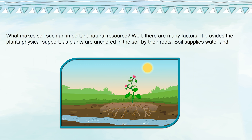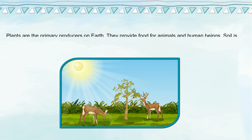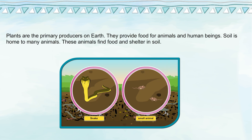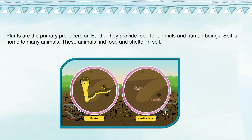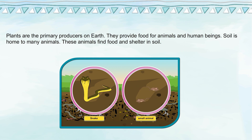Soil supplies water and nutrients to plants, which are essential for their growth. Plants are the primary producers on earth — they provide food for animals and human beings. Soil is also home to many animals, which find food and shelter in soil.